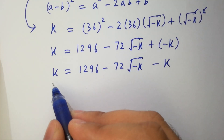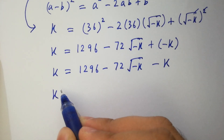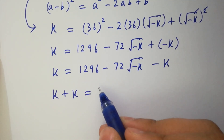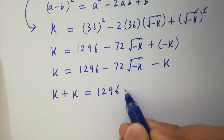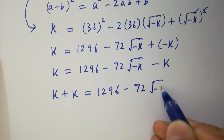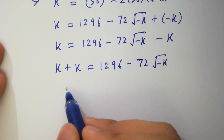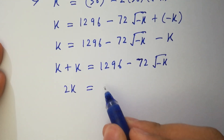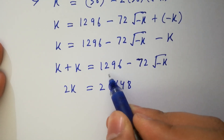We can move the minus k to the left hand side, giving plus k. So k plus k equals 1296 minus 72 square root of minus k, and k plus k gives us 2k. Here 2 can be factored out: 2 times 648 equals 1296, minus 72 square root of minus k.